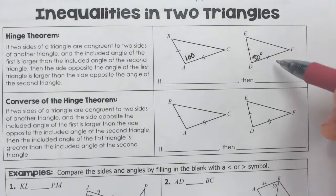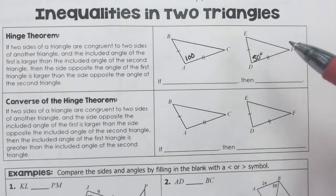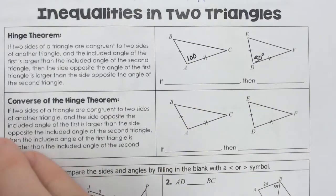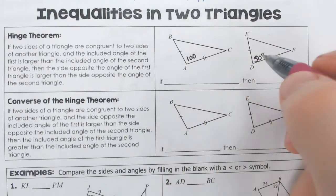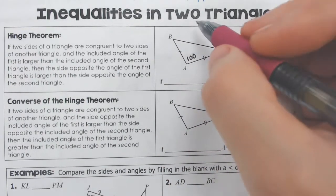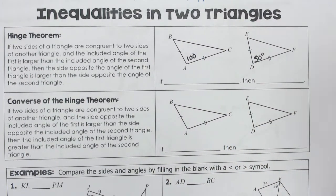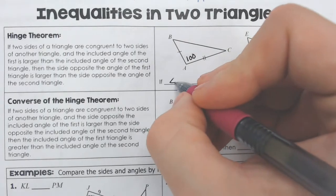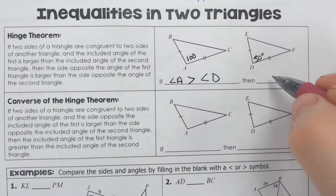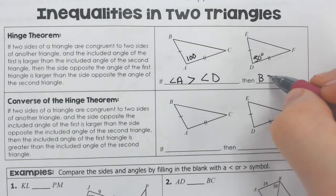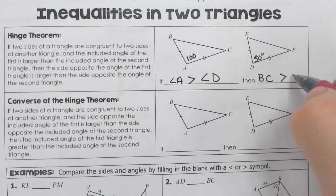Well, if these two triangles were almost identical except for that feature, according to the hinge theorem, then you could say that BC is going to have to be bigger than EF. So if angle A is greater than angle D in this case, then BC would have to be greater than EF.